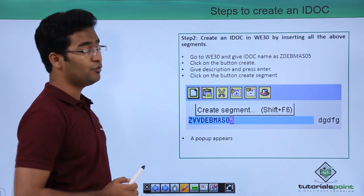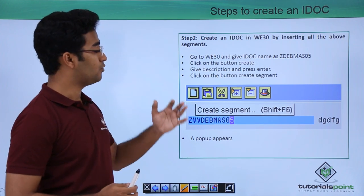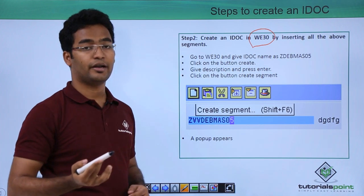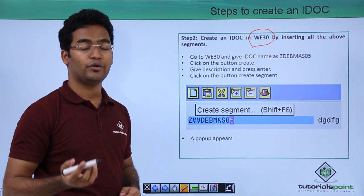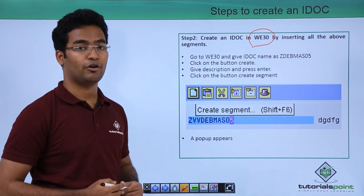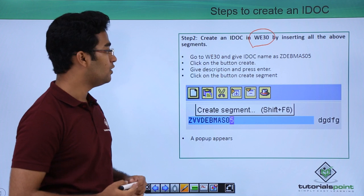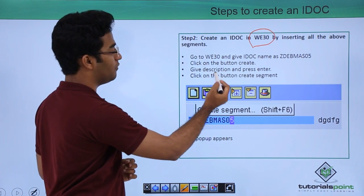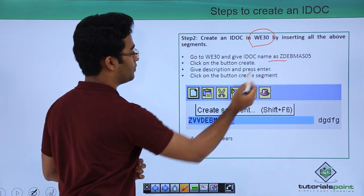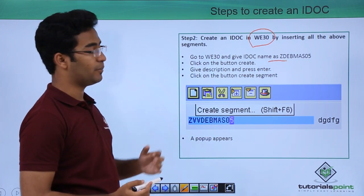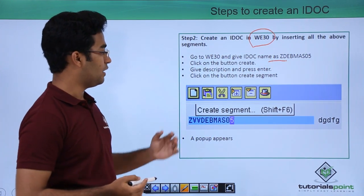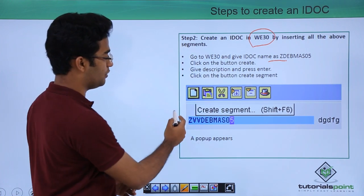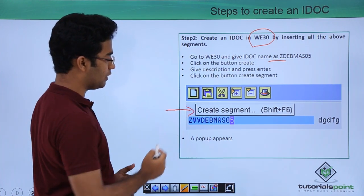Step 2 would be to create an IDOC, and to create an IDOC we have to go to WE30. After creating the IDOC we also have to insert our two segments that we have already created. To create an IDOC we go to WE30, give the name, click on create, give a particular description, press enter, and then click on the button create segment.